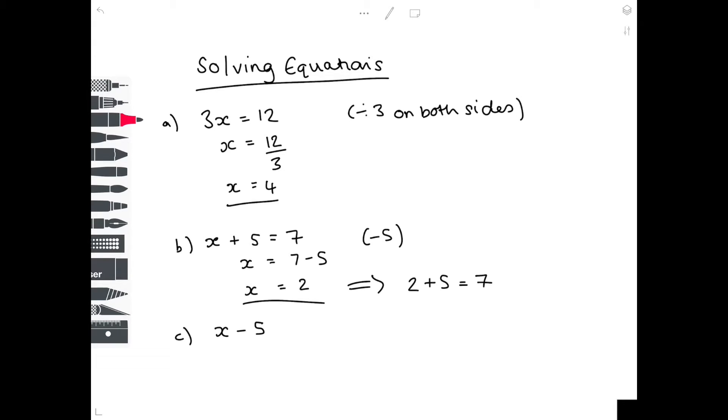In part C, we've got x minus 5 equals 1. So how do we get x by itself? Well, we need to get rid of that minus 5. How do you get to 0 from minus 5? Well, you have to add 5. We have to do that to both sides. And therefore x equals 6. And do notice that I'm lining up all my equals signs to make it a really nicely laid out piece of work. Double check your answer and see if 6 minus 5 equals 1. It does, so we know that the answer is correct.